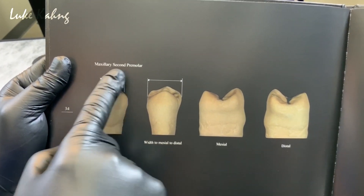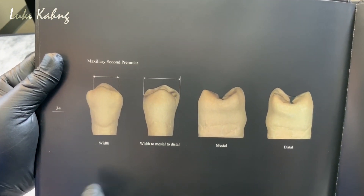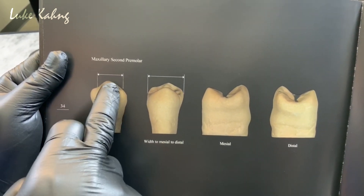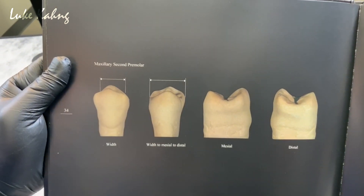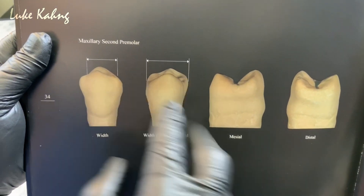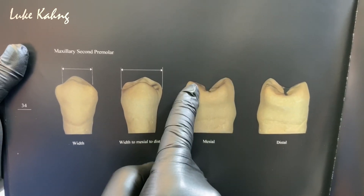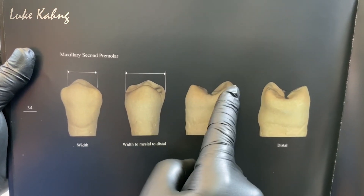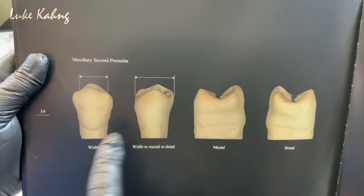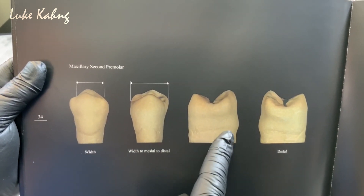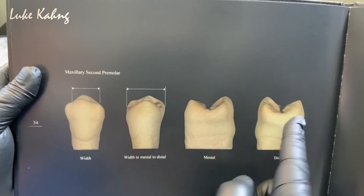Lower teeth are like that. Upper teeth are a rectangular shape — no brainer. Whenever you see the maxillary second premolar, you see the wide width. The back side, the lingual view, is smaller. Here's the side view: the visual distance, facial is slightly high. The lingual cusp is almost the same height all the time. But the lower premolar is not — it's lower. That's the difference.